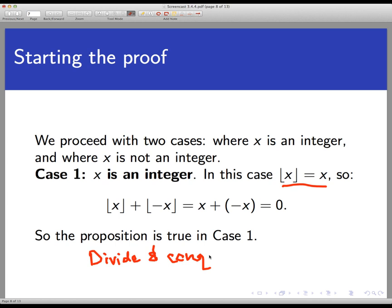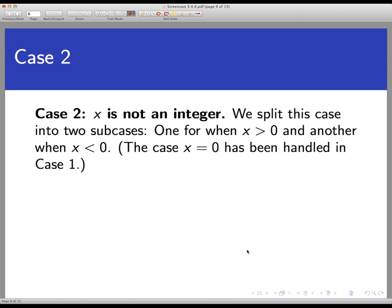And now onto the not so easy case, where x is not an integer. Here, I'm actually going to use two more cases. One, a subcase where x is going to be positive, and another subcase where x is negative. There is technically a third subcase where x is equal to zero. But since zero is an integer, I've already treated that with case one.